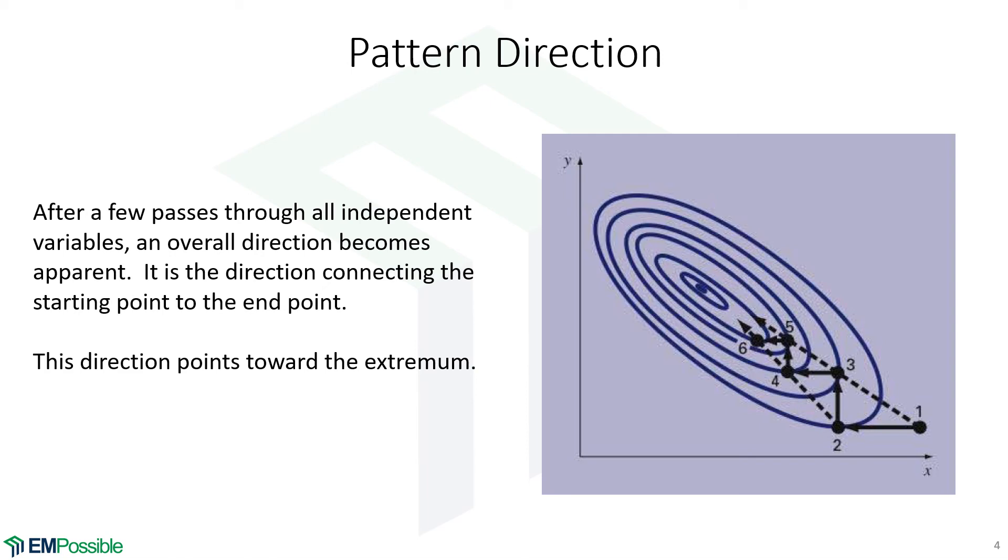And then maybe jump in the pattern direction, then repeat the univariate stuff, look for pattern direction. So you can imagine all kinds of hybrids of different algorithms. That's the univariate search. Very simple.